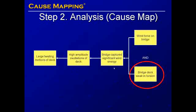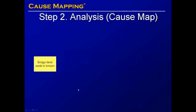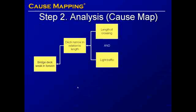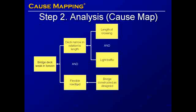Going back, we can also add more detail to the cause of the bridge deck being weak in torsion. The bridge deck was weak in torsion because the deck was narrow in relation to its length. This was due to the long length of the crossing and the light traffic, which necessitated only a two-lane narrow bridge, and because of the flexible roadbed. The flexible roadbed was also due to the bridge being constructed as designed.